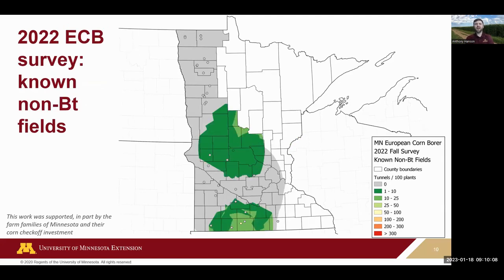For known non-BT fields — sites growers submit to us — we'd love to get more. We're hoping to continue the survey next year and always looking for non-BT sites to track background populations. In central and south-central Minnesota we're finding some positive sites. The green dots represent about one tunnel or larva per 10 plants — or 10 larvae per 100 plants — which is around treatable levels. One field in south-central Minnesota popped up with high numbers.